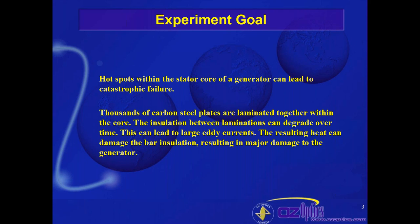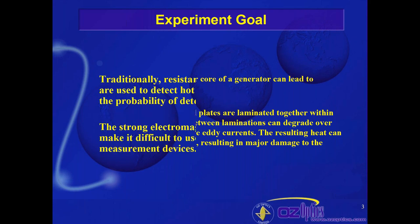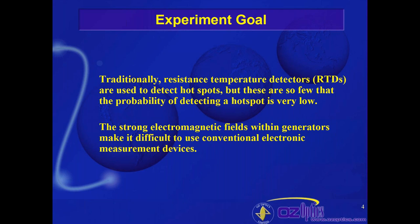The whole purpose of this experiment was really to determine: can we monitor what's going on inside the generator while it's running? Traditionally, devices called RTDs — resistive temperature detectors — have been used for detecting hot spots. But unfortunately, each of these requires a separate wire. If you have dozens or even hundreds of RTDs inside a system, that's an awful lot of wiring. RTDs provide only limited point coverage — they detect temperature at specific points inside the generator. You want a bigger, broader picture: what's going on between these RTDs? RTDs alone just won't answer that question.